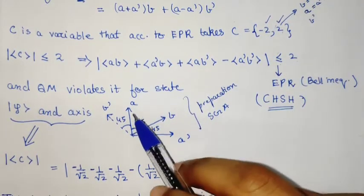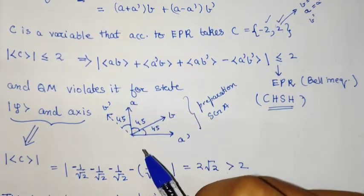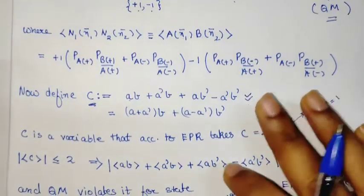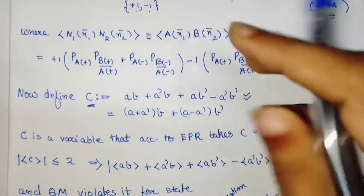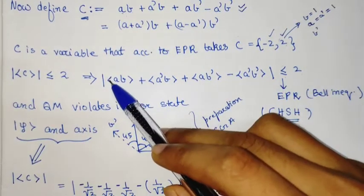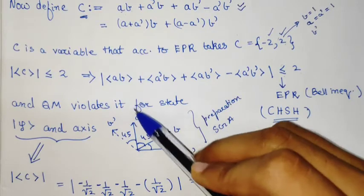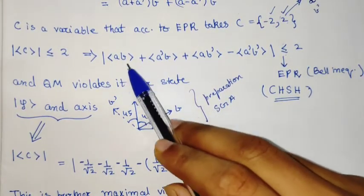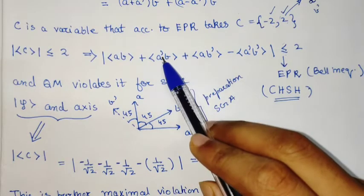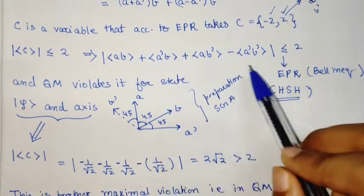The expectation of ab is calculated from the axes. The angle between a and b is 45°, between a' and b is 45°, between a and b' is 45°, and between a' and b' is 135°.